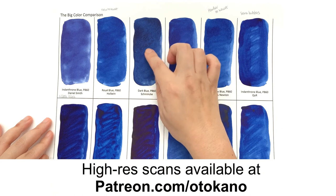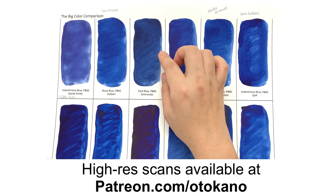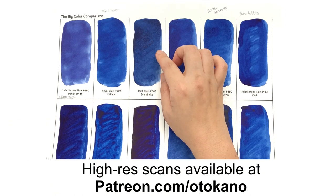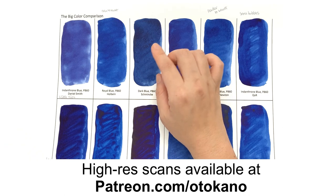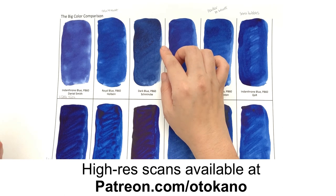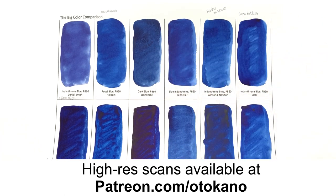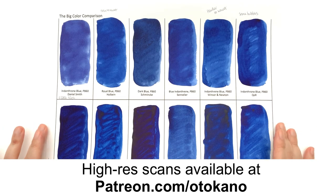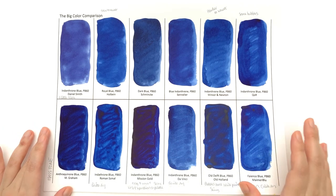Interestingly, I'm definitely noticing some granulation happening here, and I don't know if it's supposed to do that or if it's my weird Dark Blue Indigo tube, but it's the only one that have really granulated on this paper.